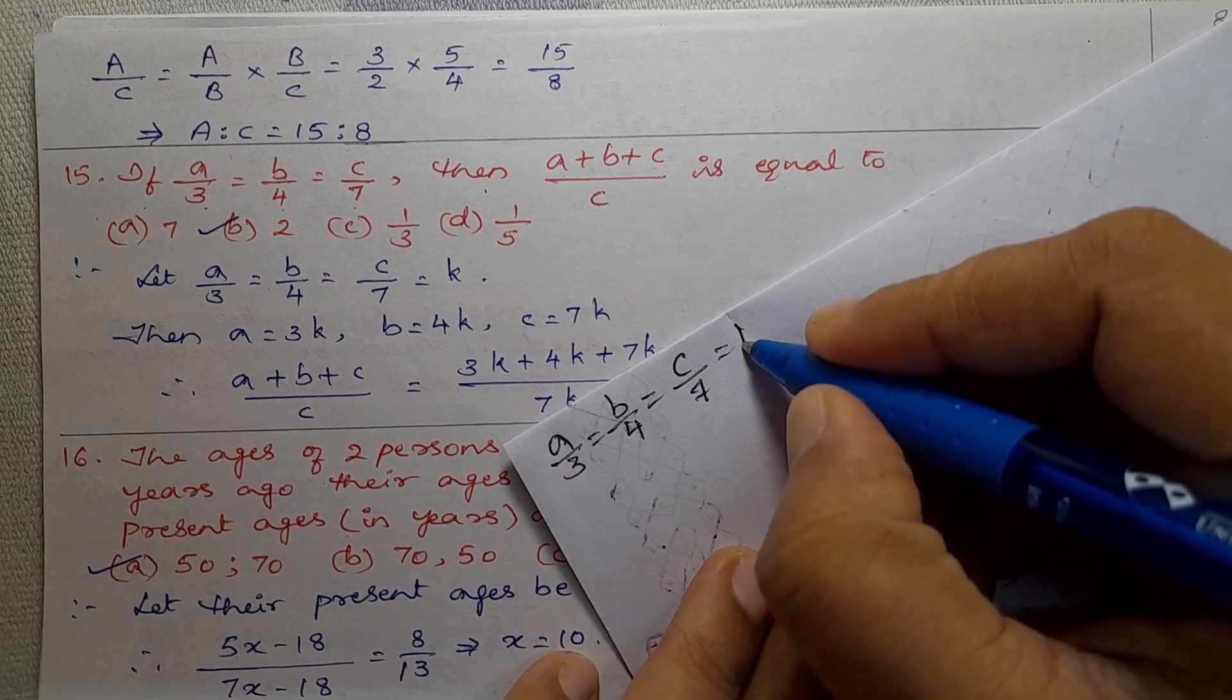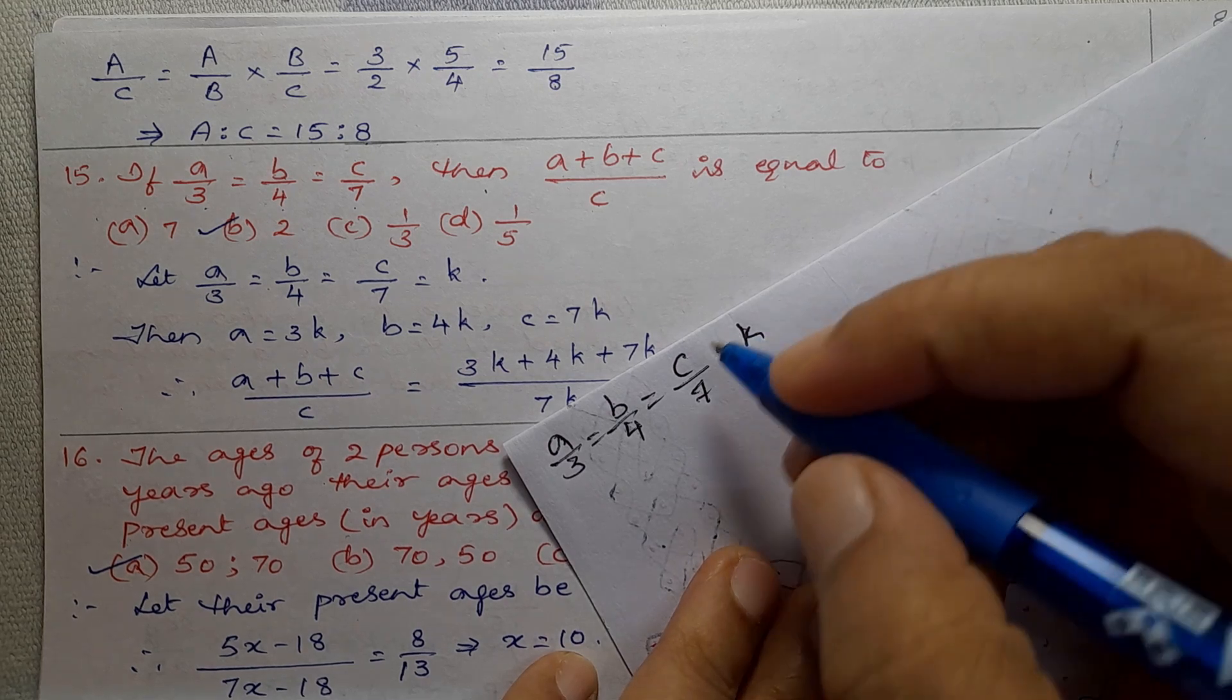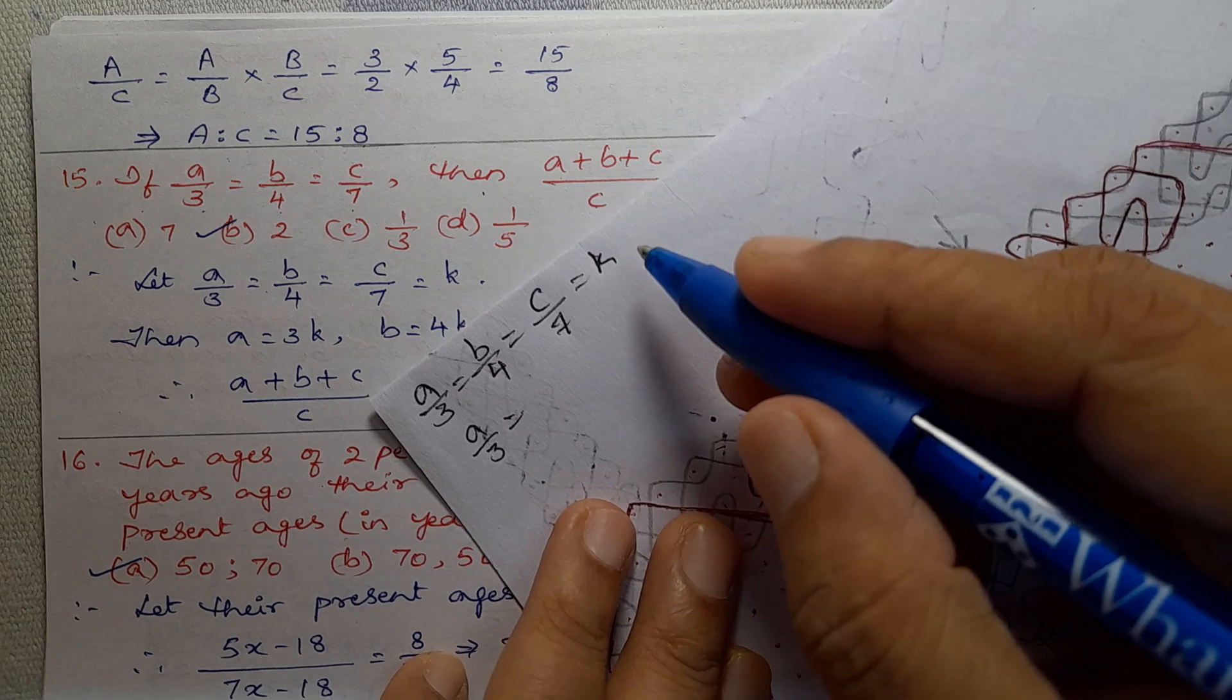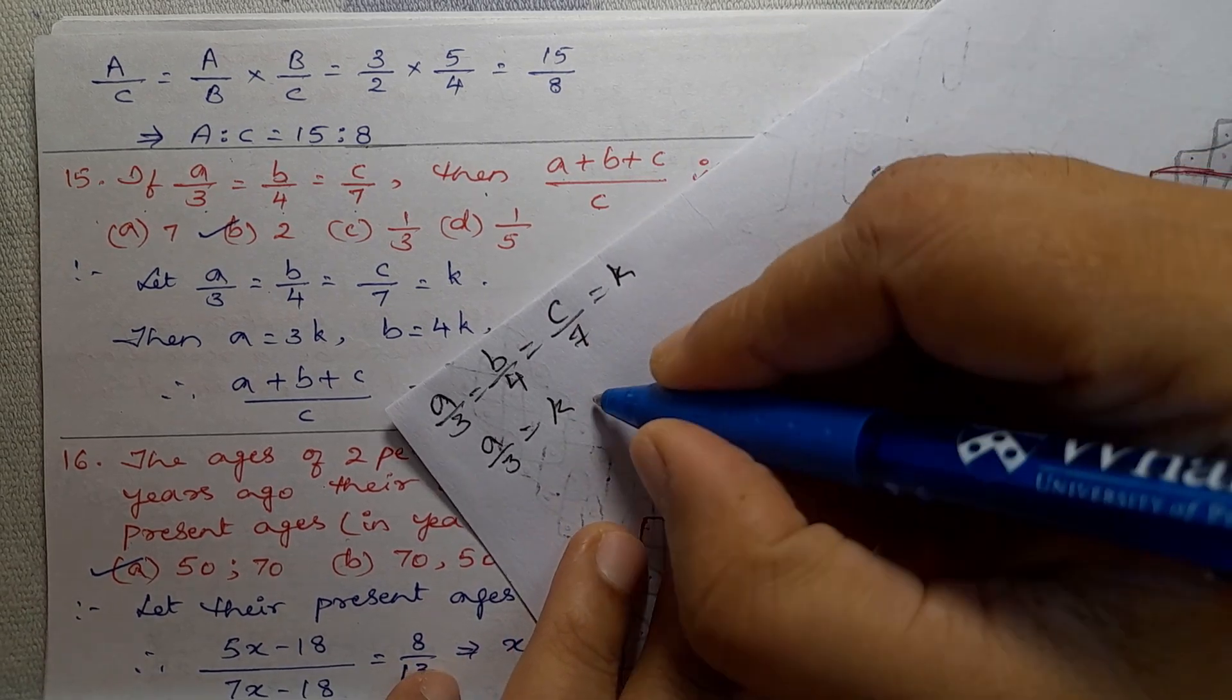Problem number 15. Next, A by 3 equal to K, that is K. Next, B by 4 equal to K.